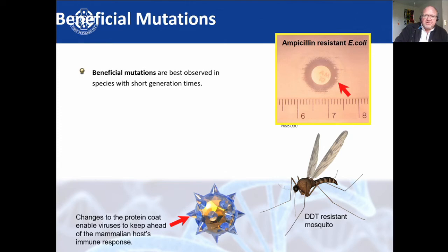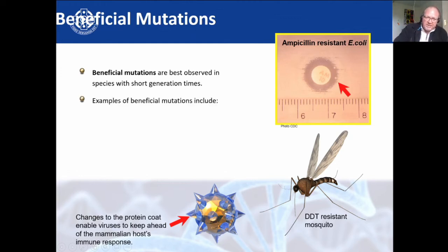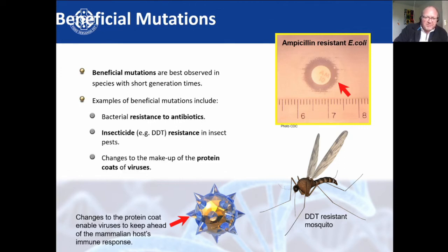A beneficial mutation for the mosquito: the Anopheles mosquito that spreads malaria became resistant to DDT, which was a very bad pesticide used to try to eradicate mosquitoes. Some of them became resistant to it due to a mutation. The same thing happens with antibiotic resistance in organisms. This is E. coli — you can see around the antibiotic there's a zone of inhibition, meaning the bacteria are definitely affected by the antibiotic. But look carefully — there are two colonies growing right there that are more resistant to the ampicillin.